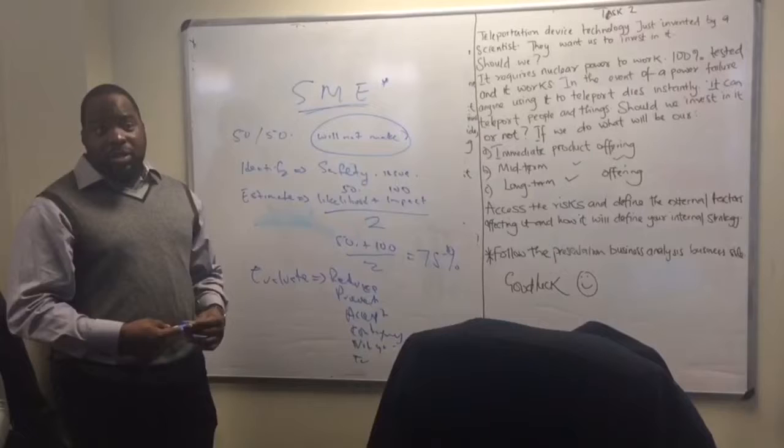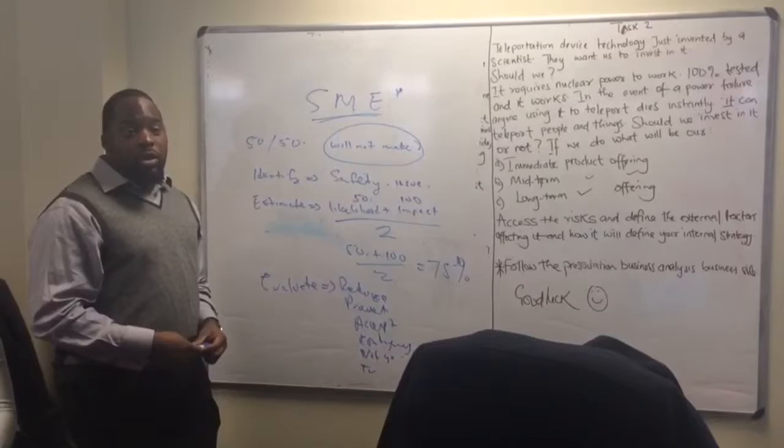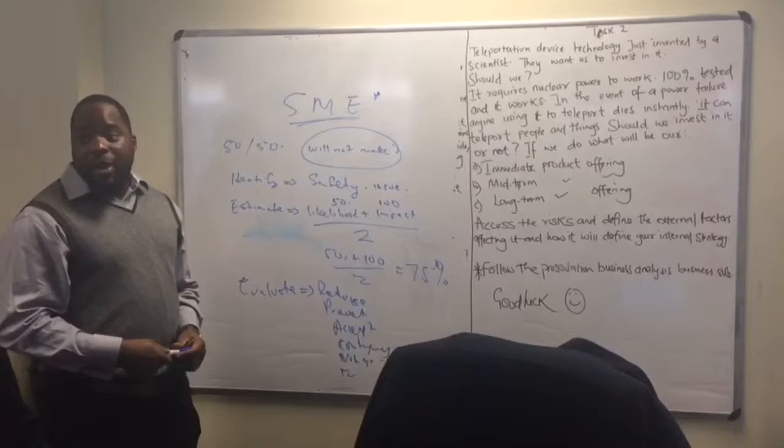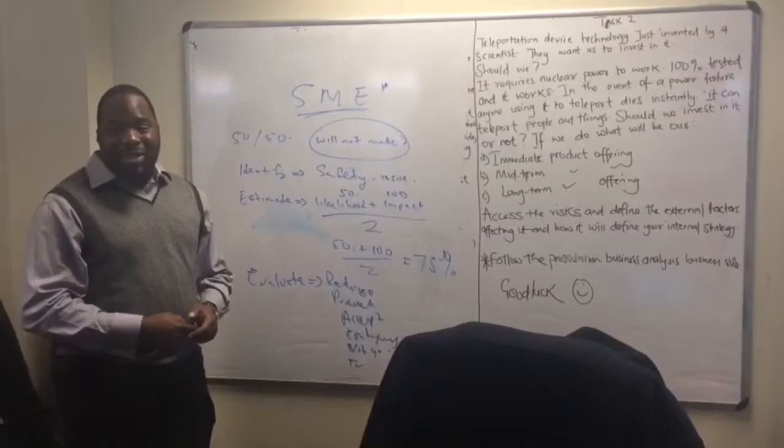So whenever they tell you to go and assess the risk of something, you don't go and just pick the likelihood, or you don't take the impact on its own. You need to take the average of the two to help you evaluate that risk. Only then can you plan against it by managing that risk. So you understand why you've got your points now?